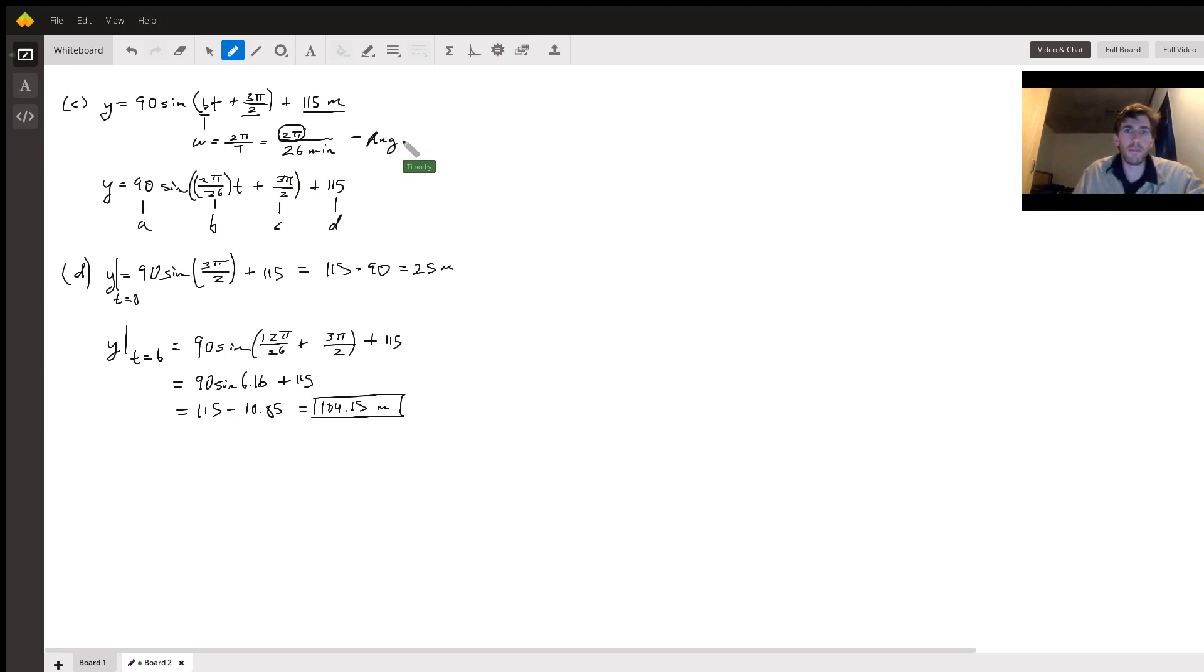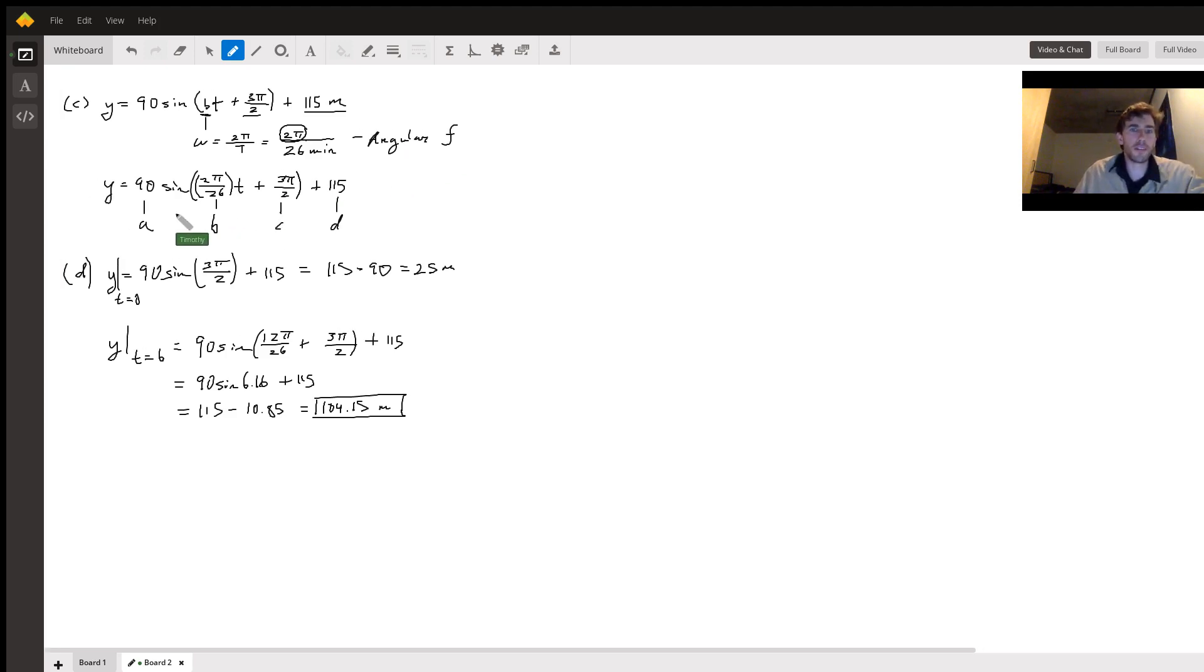Angular frequency. So now the equation is 90 sine two pi over 26 t plus 3 pi over 2 plus 115 meters. Let's just keep the units on there. Now we need to see if this equation is correct. So let's just give it a test run.